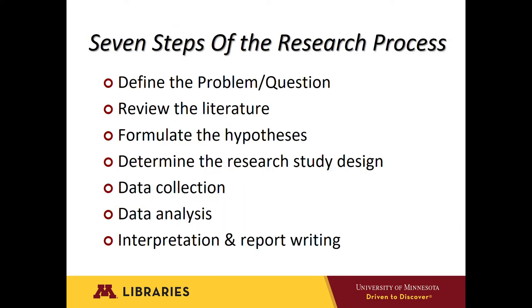Generally, a researcher conducts research work within seven steps, though there are research processes that have only five steps or as many as ten steps. Based on the type of question asked or the type of science being applied, the researcher may alter or remove one or several of the steps. Here are the seven steps of the scientific method: defining the problem, reviewing the literature, formulating a hypothesis, choosing a research design, collecting data, analyzing the data, and finally interpretation and report writing.